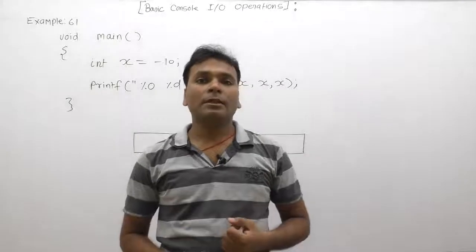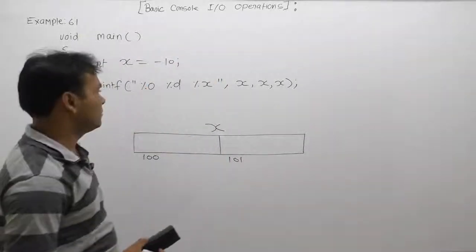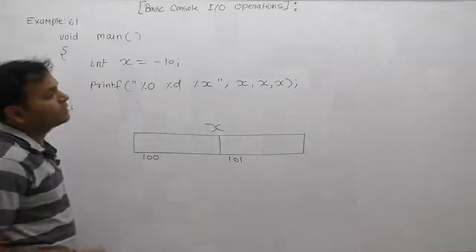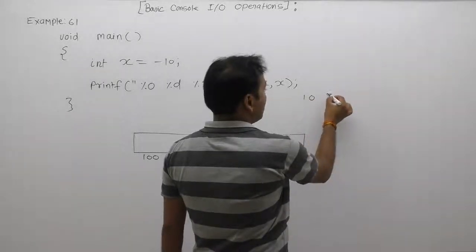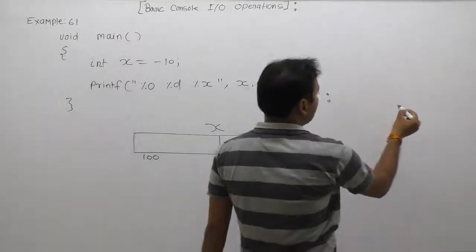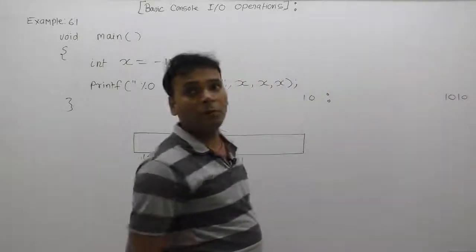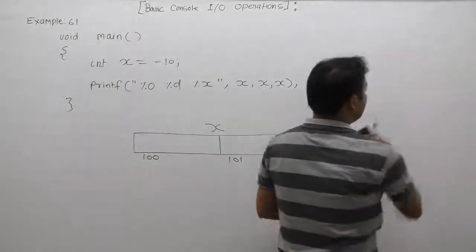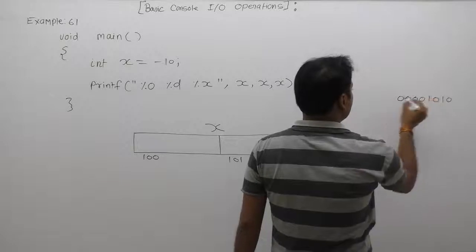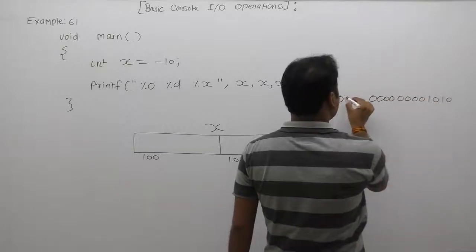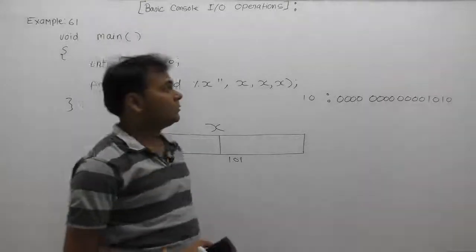We are explaining this program with respect to 16-bit C compilers. According to a 16-bit compiler, integer will take two bytes, so we are allocating two bytes of memory. After that, we are assigning the value minus 10. What is the binary number of 10 in the form of 16 bits? The binary number of 10 is always 1010, and the remaining bits are 0.